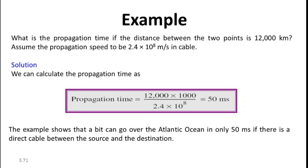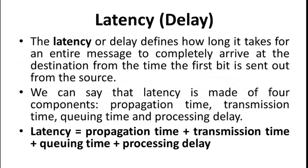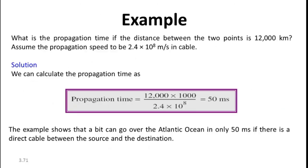To calculate propagation time, we use distance divided by speed. The distance is 12,000 km × 1000 to convert to meters, divided by 2.4 × 10⁸, which equals 50 milliseconds. This example shows that a bit can travel over the Atlantic Ocean in only 50 milliseconds if there is a direct cable between the source and destination over a distance of 12,000 km. Next, we calculate transmission time.